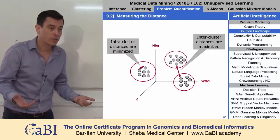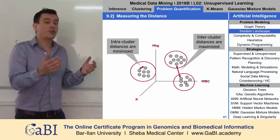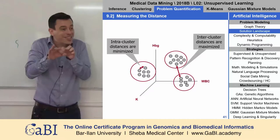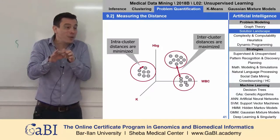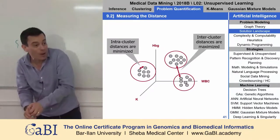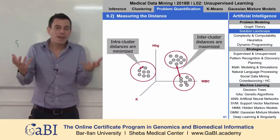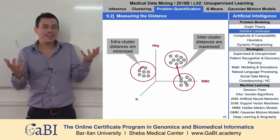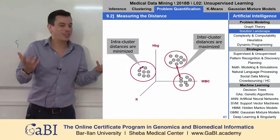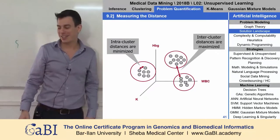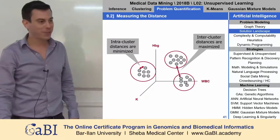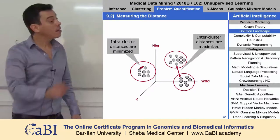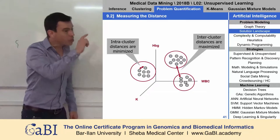Of course, if I choose more groups, then the inter-cluster distances will be smaller. So how do I make a decision in this trade-off? It depends on the biological question.